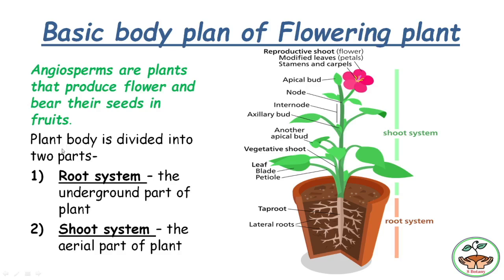How can we differentiate the plant body? The plant body is divided into two parts: the root system and the shoot system. The root system is the underground part of the plant and the shoot system is the aerial part of the plant.